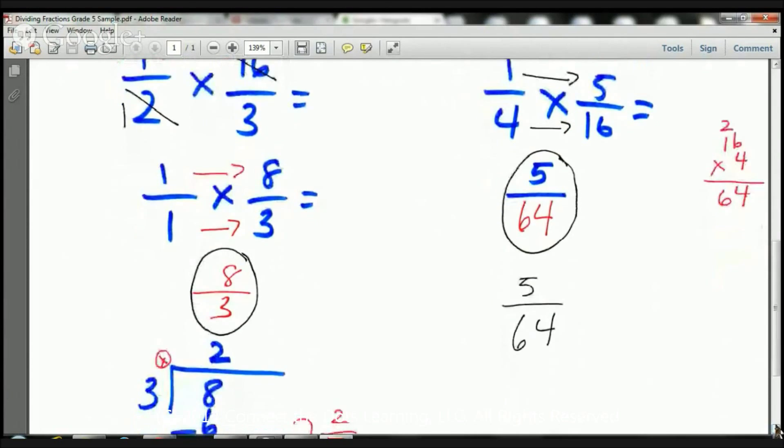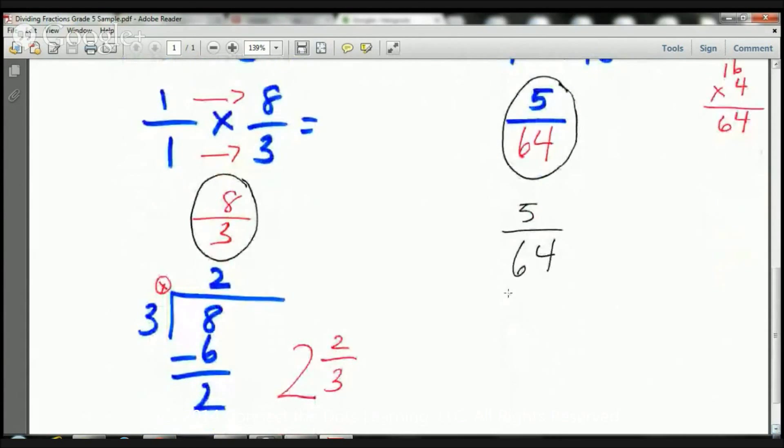So, we have eight-thirds, but because I have eight-thirds, my numerator is larger than my denominator. This is going to be a mixed number. So, what do I do? I do eight divided by three. I always like to put my pretend multiplication sign. Three goes into eight two times. Three times two is six. Eight minus six is two.